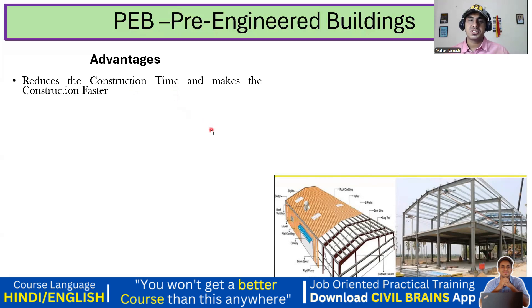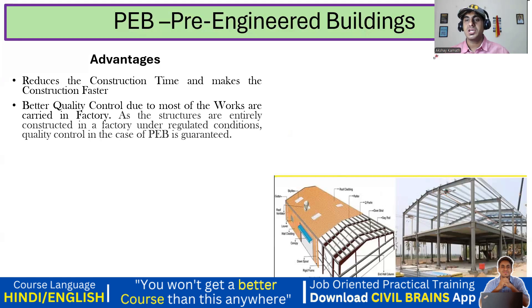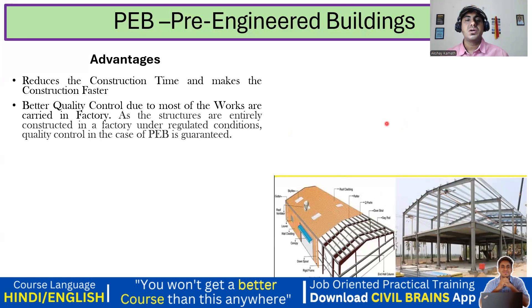The second advantage is better quality control, since most of the work is carried out in the factory. As structures are entirely constructed in a factory under regulated conditions, quality control in PEB is guaranteed. All materials are processed in the factory, so there is good quality control, which is the second advantage of PEB structures.